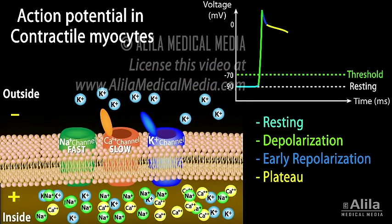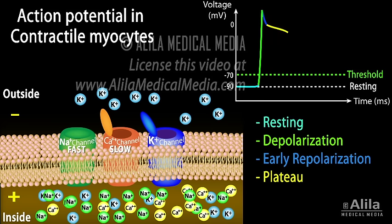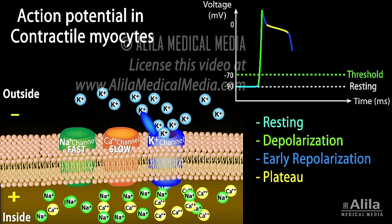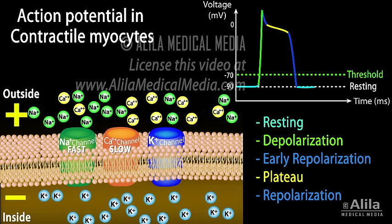Calcium then sets off muscle contraction by the same sliding filament mechanism described for skeletal muscle. The contraction starts about halfway through the plateau phase and lasts till the end of this phase. As calcium channels slowly close, potassium efflux predominates and membrane voltage returns to its resting value. Calcium is actively transported out of the cell and also back to the SR. The sodium-potassium pump then restores the ionic balance across the membrane.